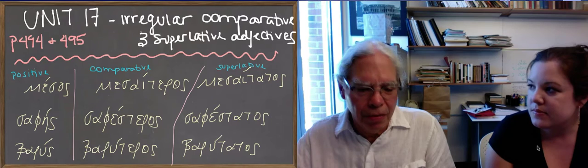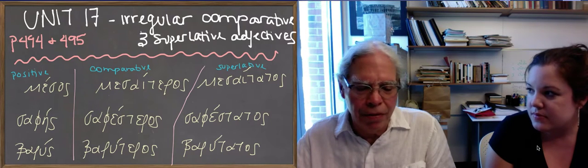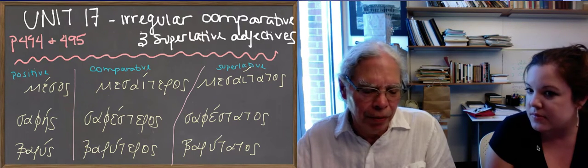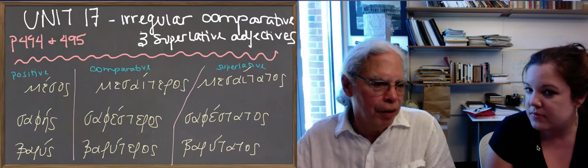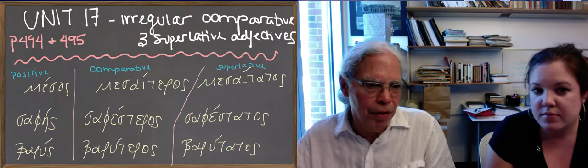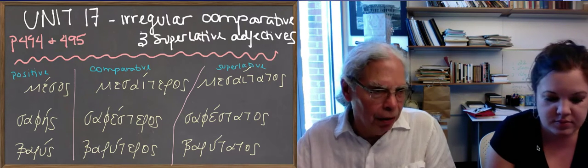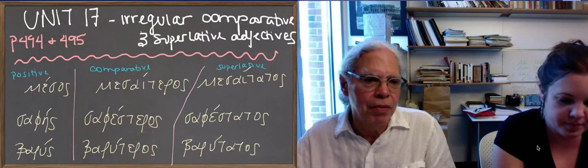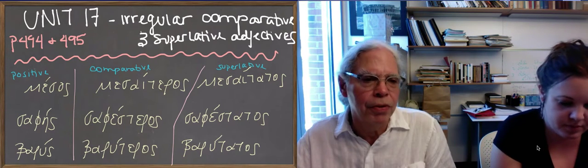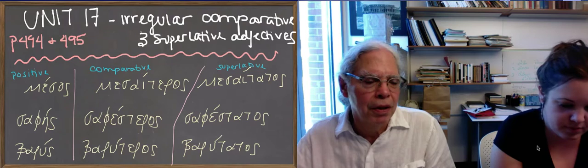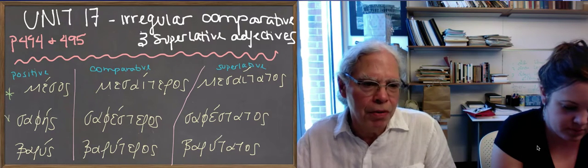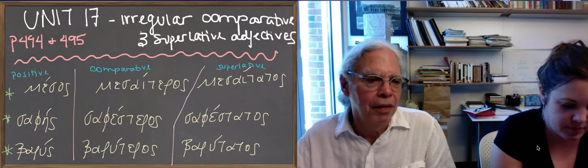And now we're going to talk about irregular comparisons, some that are similar to the regular ones, like the ones showing on the blackboard: mesos, which means in the middle; safes, which means clear or lucid; and barus, which means deep or heavy.